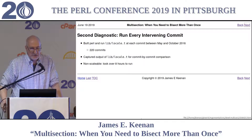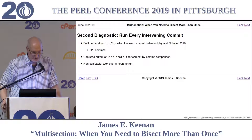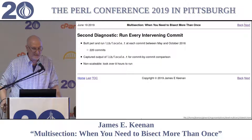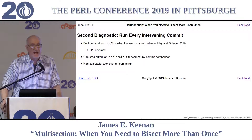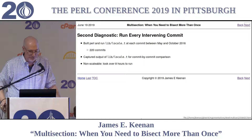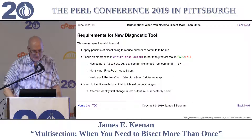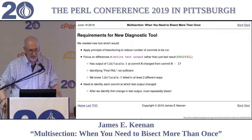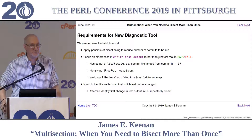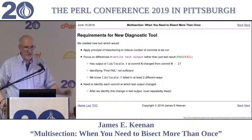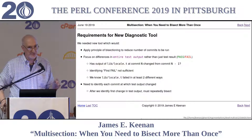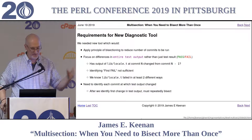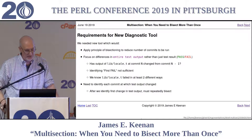Between May and October, there were 220 commits to the core distribution. My first approach was to capture the output of LibLocale.t for a commit-by-commit comparison — but as you might guess, this was non-scalable. The program took over eight hours to run. So I figured we needed a new tool which would apply the principle of bisectioning to reduce the number of commits, but instead of just looking for pass or fail, would focus on differences in the entire test output — the entire TAP — rather than just the test result.